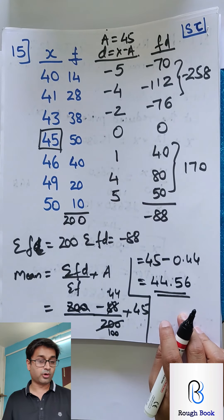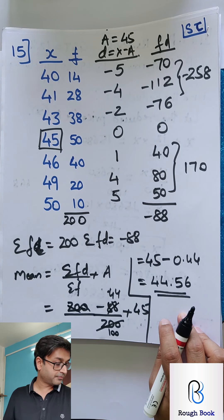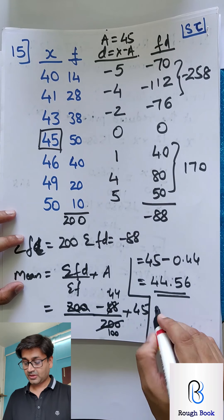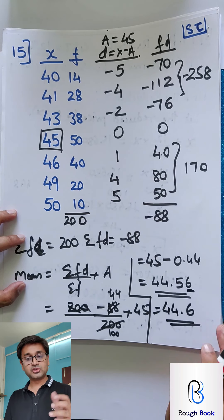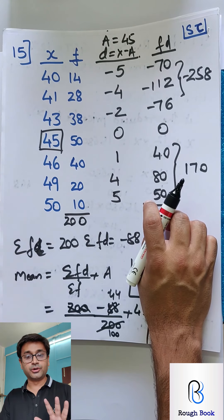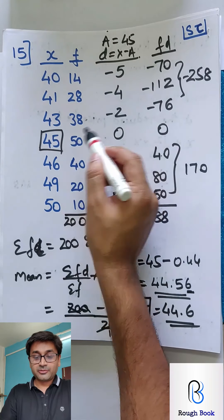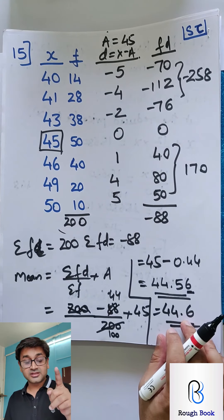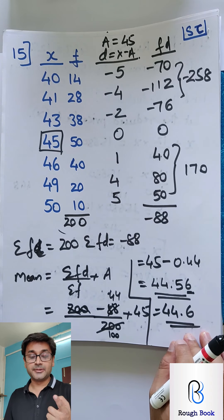Let's check: sum number 15 answer is 44.6 — correct. The digit after the first decimal place was 6, which is ≥5, so we added 1 to get 44.6. Once again, the method: assume A, subtract A from each X to get D, multiply by F to get FD, then apply A plus summation FD upon summation F. Notice the predicted mean of 45 and the actual answer 44.6 are very close — our prediction was good.